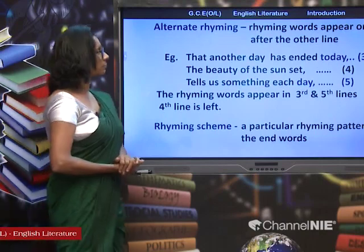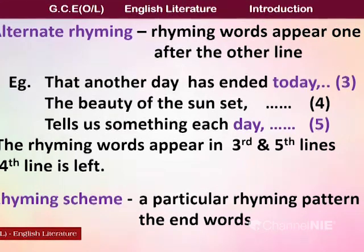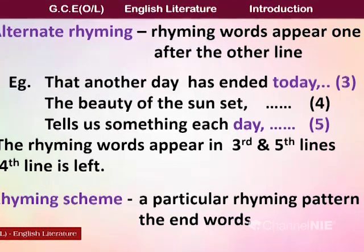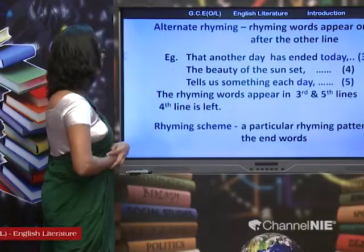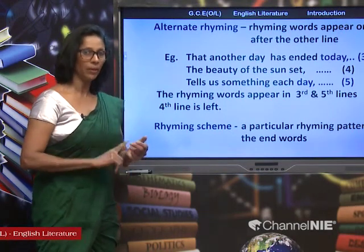In alternate rhyming, the rhyming words appear on line three and line five — line four is left out. The two rhyming words appear not immediately after one another but leaving another line. So we call it alternate rhyming. There are two rhyming patterns: one is rhyming couplets and the other one is alternate rhyming.